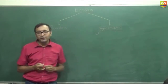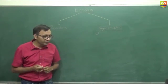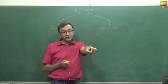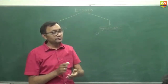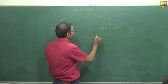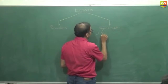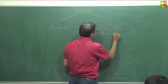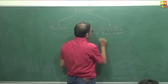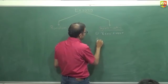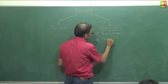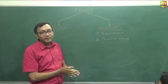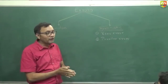Can you give examples? Zero error. Parallax error. What else?